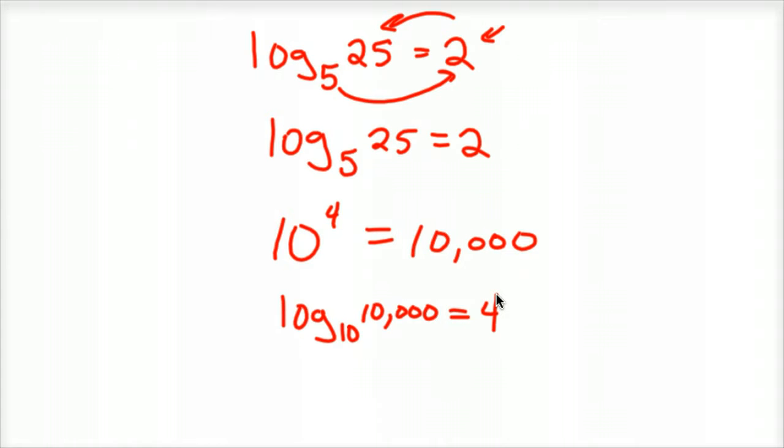And hopefully you remembered that the common logarithm doesn't need that 10, and you just wrote this: log of 10,000 equals 4. Those mean the same thing. And again, 10 to the 4th equals 10,000. And a common logarithm always has a base 10.